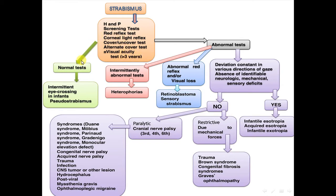If all the results are normal, this may be intermittent eye crossing in an infant or pseudostrabismus. If results are abnormal — such as an intermittently abnormal test, this is heterophoria — or if there is an abnormal red reflex and/or visual loss, consider retinoblastoma or sensory strabismus.